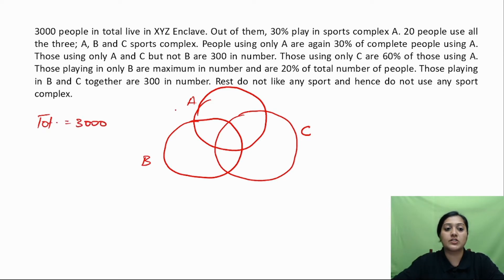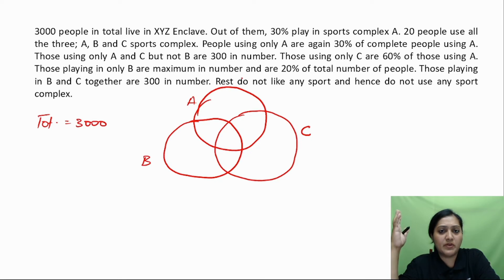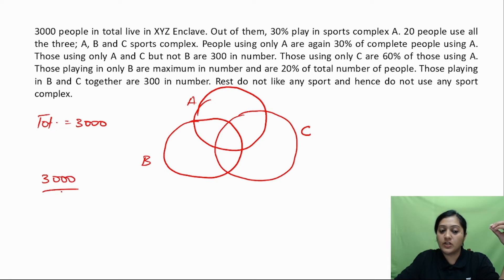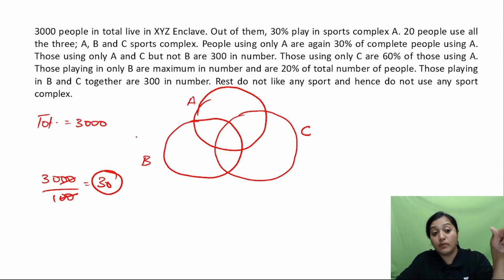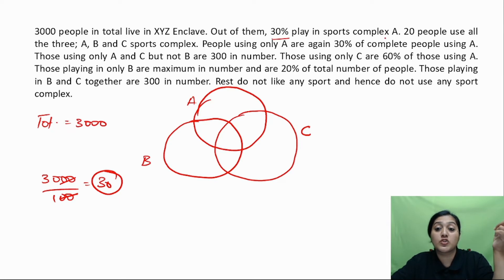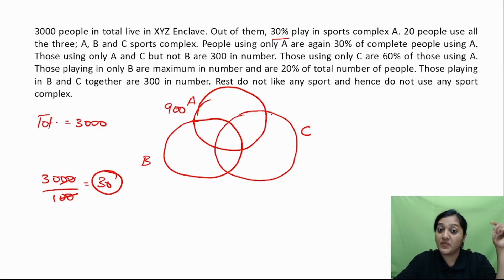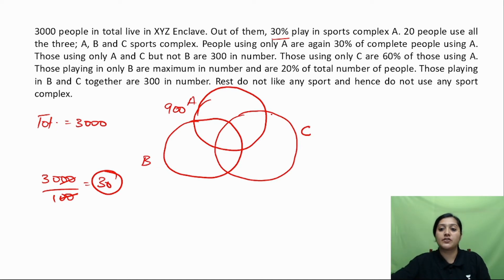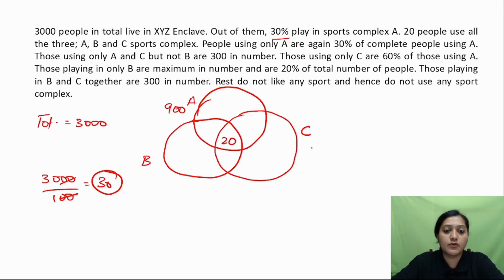Thirty percent use sports complex A. To find 30% of 3,000: multiply 30 by 30 to get 900 — that is the total number of people using sports complex A, representing the complete circle A. Twenty people use all three complexes A, B, and C — that is the center portion of the Venn diagram.